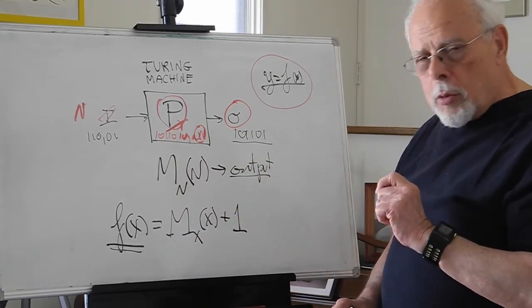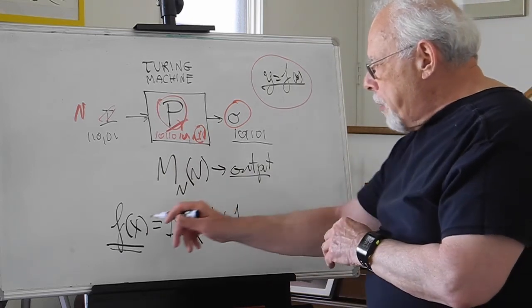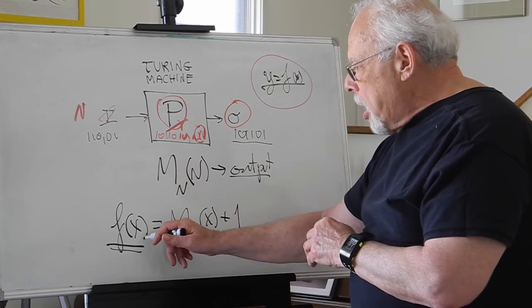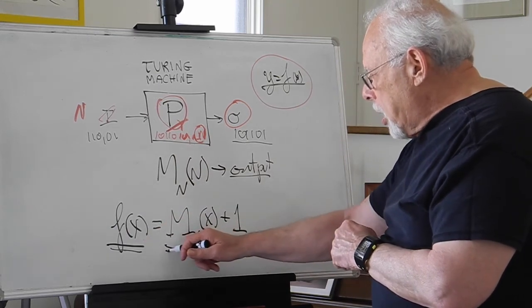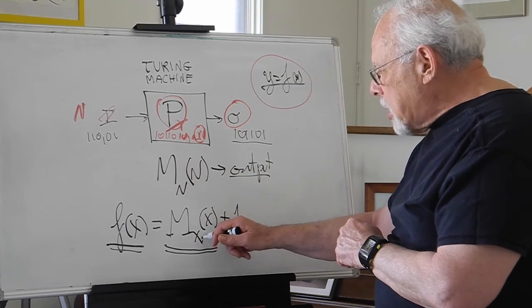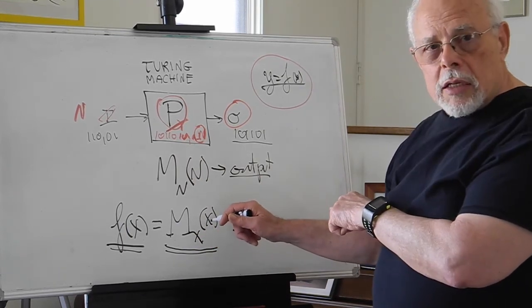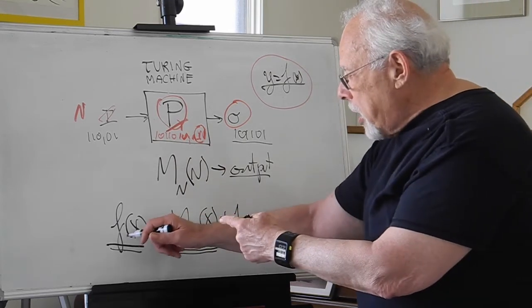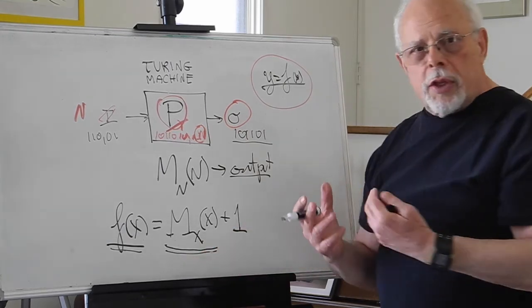His argument was a little bit tricky, but here is how it goes. If there is such a machine, this machine should, for X, give the result of M(X) of X. But F(X) is defined as M(X) of X plus 1. So it's a contradiction.